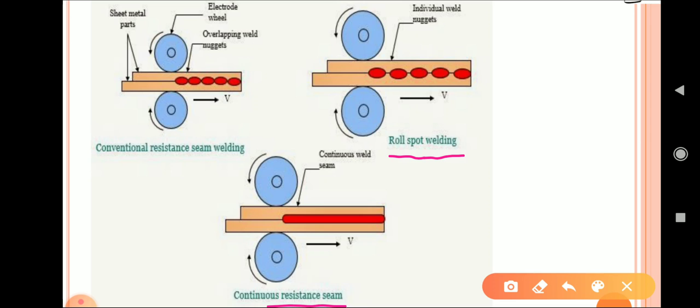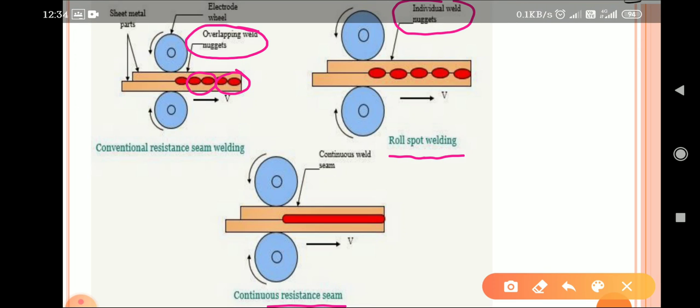In the first type, conventional resistance seam weld, you can see overlapping weld nuggets - continuously we get overlapping nuggets or weld spots in a sheet metal part. In roll spot welding, in the second figure, we can see individual weld nuggets that are separated by some distance.